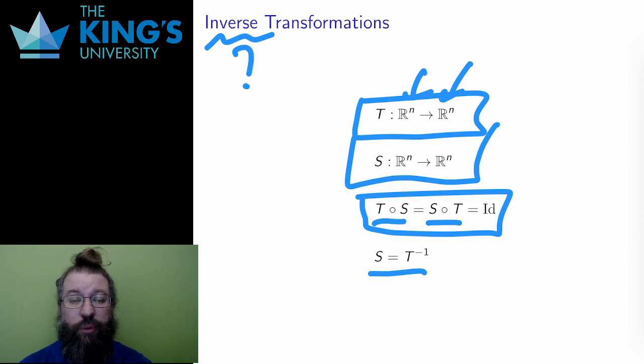The identity is the transformation that doesn't do anything, that keeps everything the same. Doing S and then T and getting the identity means that S undoes whatever T is doing. And that's an inverse.